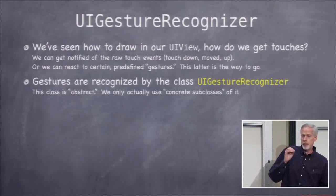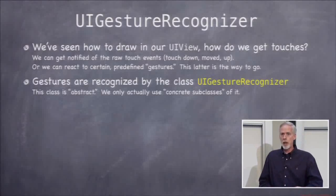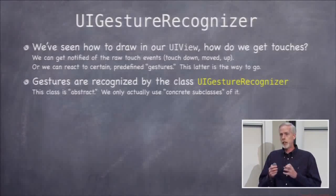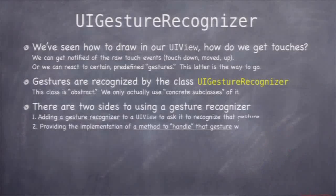The class that is the base for all gesture recognizing is called UIGestureRecognizer. It's an abstract class — you never instantiate it. But it has a lot of concrete subclasses, like pinch gesture and tap gesture, and those do the actual recognition of a gesture and communicate with you when it does. There are two parts to using a gesture recognizer: you have to create one and add it to a view, because views are the ones that have a coordinate system to know where the touches were.